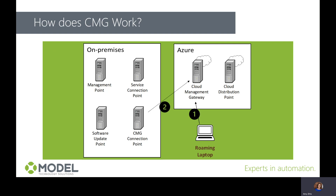The CMG Cloud Service gets the policy from on-premises through the CMG Connection Point role. The CMG Connection Point role acts as a proxy and builds a two-way communication channel between the on-premises Configuration Manager management point and the Azure CMG Cloud Service.